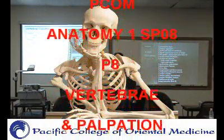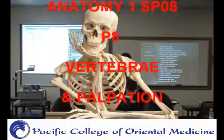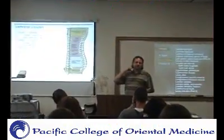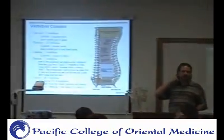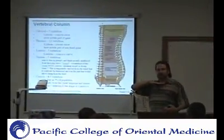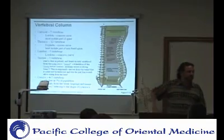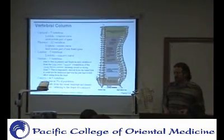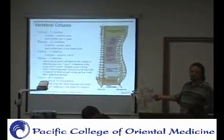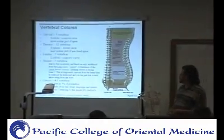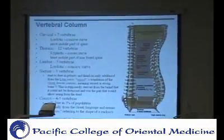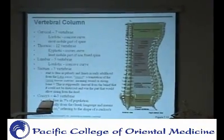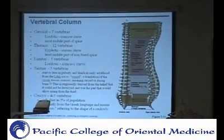So now we talk about the vertebral column as a whole. Do we know what the other name for the neck is? Cervical. And then the mid-back is usually the thoracic. Then you have lumbar. So we have seven cervical vertebrae, 12 thoracic, five lumbar.